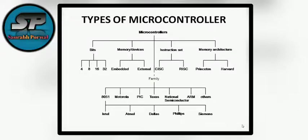Types of microcontrollers: a microcontroller can be classified in terms of the number of bits, memory devices, instruction sets, and memory architecture. Number of bits means how much data it can process at a time — that is, 4-bit, 8-bit, 16-bit, or 32-bit data that a processor or controller can process at a time. Memory devices refer to the different devices which are embedded or which have to be connected externally, and this is also a criterion to select a microcontroller.